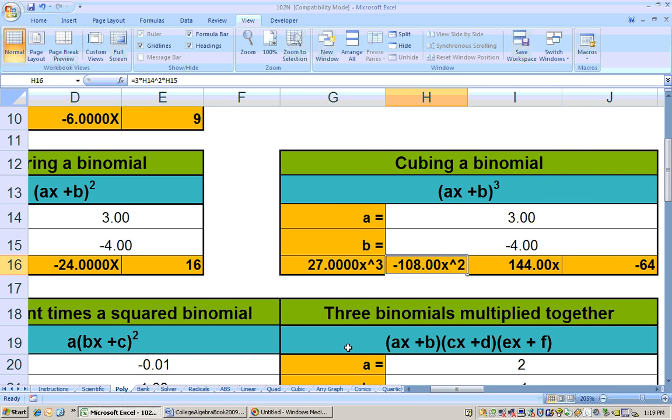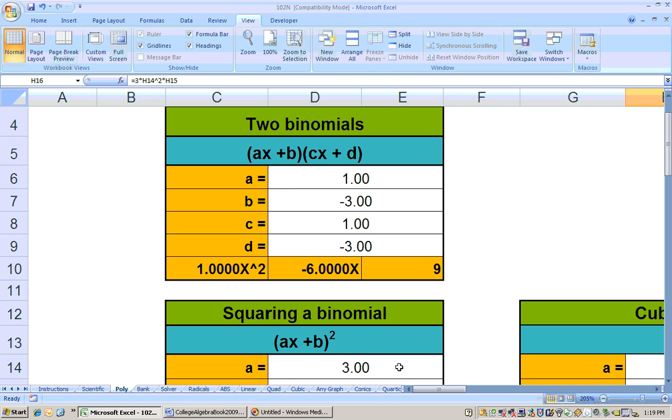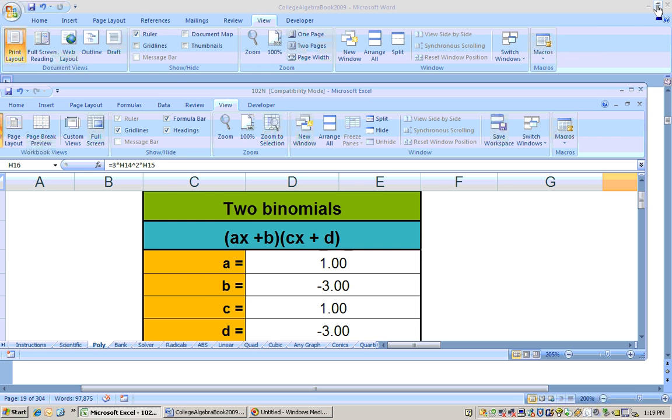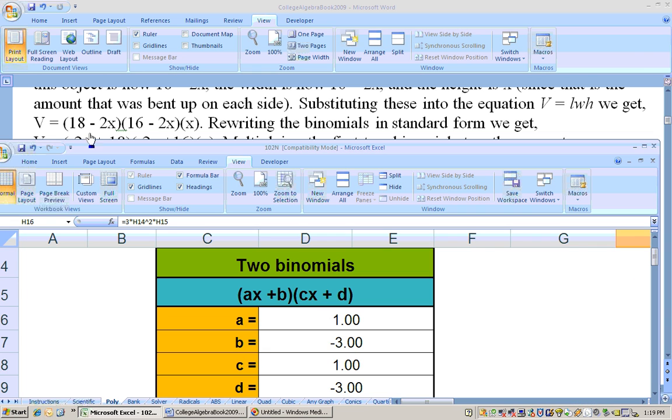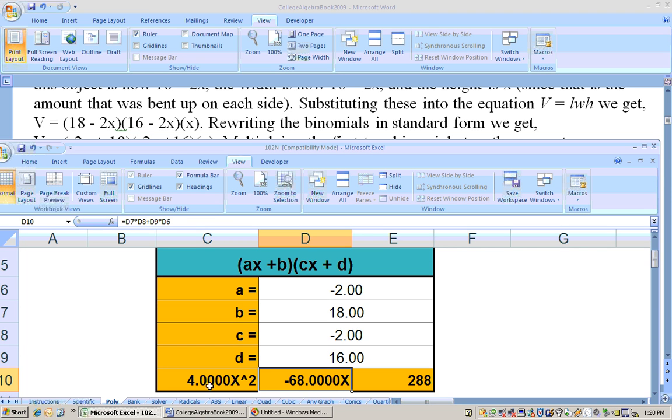So let me get the Excel sheet up here, and I need to multiply these two binomials together. Let me shrink this down a little bit so I can see the problem at the same time. And right here is the first two binomials I need to multiply together. Now it's 18 minus 2x. So the a, if you're going to use Excel, the a, the number before the x, isn't 18, it's minus 2. So that's minus 2. The b, the constant by itself, is 18. The c is minus 2. And the d is 16. And those multiply together would give you 4x squared minus 68x plus 288.